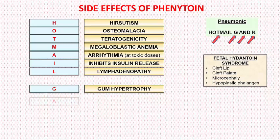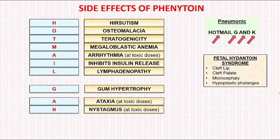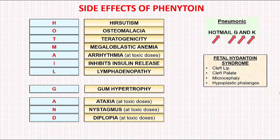The next three letters — A, N, and D — stand for the cerebellar symptoms: ataxia, nystagmus, and diplopia. All three of these cerebellar symptoms are observed at toxic doses of phenytoin.